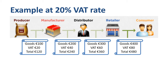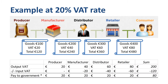Value gets added along the way in the chain of supply; each company provides specific expertise and skills, and sells at a higher price than what they purchased the goods for. Here is how the collection in stages by the government works. The producer on the left has charged the manufacturer 20 euro output VAT and has no input VAT, so settles 20 euro through a payment to the government.